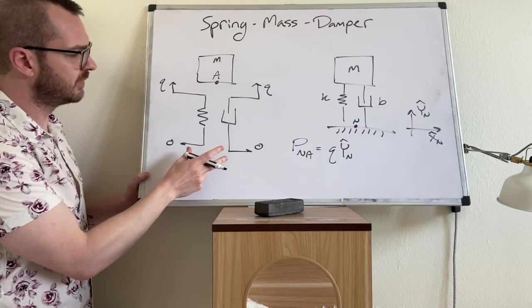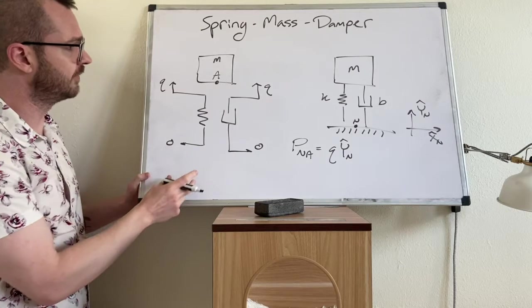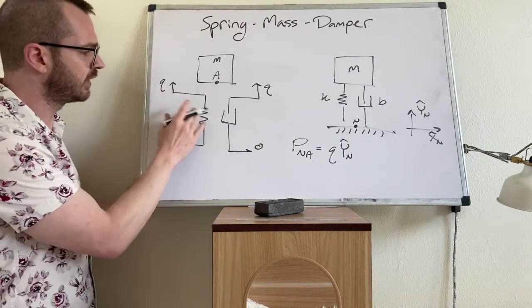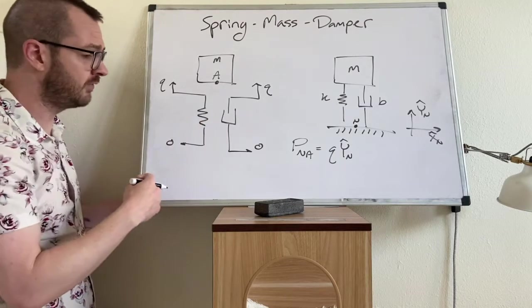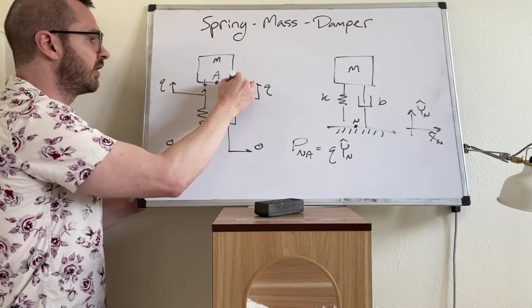Next, we have to make some assumptions about the current state of our system. By which I mean we have to choose a direction for the spring force and the damper force. So you have to choose is the spring currently in tension or is it in compression?